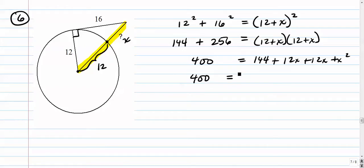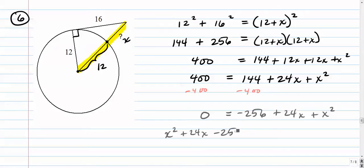So now we have a quadratic on the right side. 144 + 24x + x². When you have a quadratic, you're going to want to get all the terms on one side. So I'm going to subtract 400 from both sides. And that will bring me to 0 = -256 + 24x + x². Let's rearrange this so the x² is over here, 24x is right here, the -256 is right here, and the zero is right there.